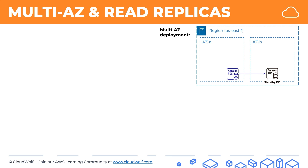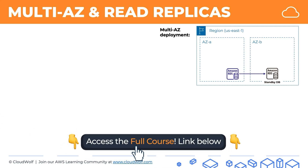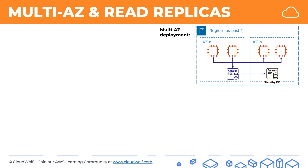So if something happens to the original availability zone — if it fails or is temporarily unavailable, or our database is temporarily unavailable — then our application will still be available to users, because the EC2 instances that are using the original database will switch over to this standby database. Any data that is put into the original database is copied via synchronous replication into this standby database. It's important to remember for the exam that in multi-AZ deployment, the replication type is synchronous, meaning data is copied pretty much instantaneously over to the other database, so we have a fresh copy of the data there at all times.